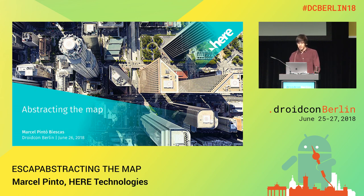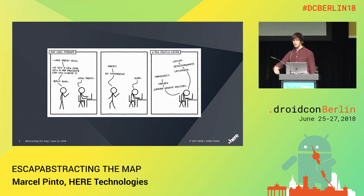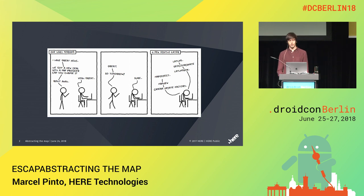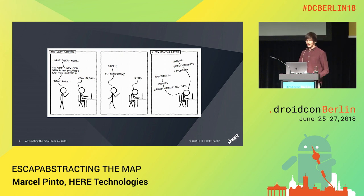Maybe this situation is familiar to you. You're one day in the office, your PO comes and says, hey, we got a super nice deal with this new map provider. Can we change it right away? And you're like, sure, let's try. After a month, you're still in your code, finding that all the clusters from the map are everywhere — lat/long here, map objects over there. Then it becomes a nightmare to do this refactor.